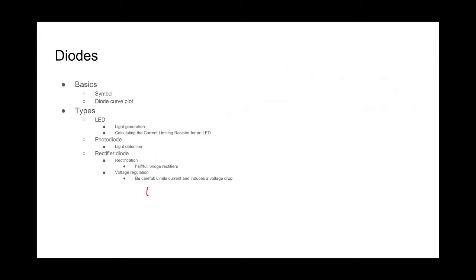So for example, you could take a 5-volt supply, put it through a rectifier diode, and on the other side get 4.3 volts. The thing to keep in mind is that limits how much current you can draw from that voltage source and it induces a voltage drop. This can be useful if you want reverse voltage protection, but it's not a cure-all — it's not a panacea.